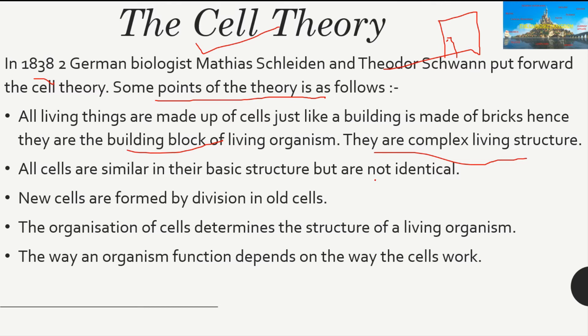The next thing is that the way an organism functions depends on the way its cells work. If a particular group of cells starts malfunctioning, the organ or the part they belong to will also start malfunctioning, and hence the organism will be affected. So the way the organism works depends on the way the cells work.